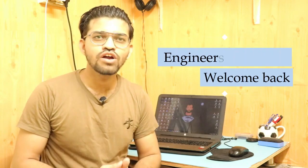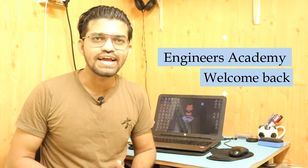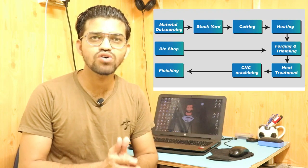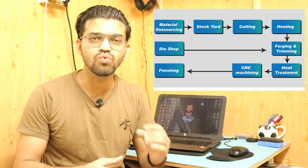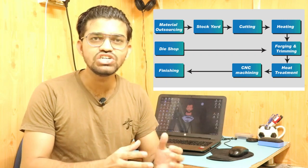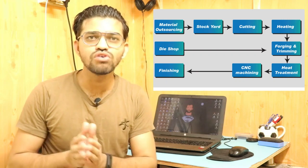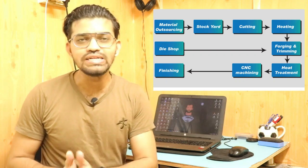Hi everyone, welcome back to another video of Ingenious Academy. In any manufacturing industry, there are several types of processes which are conducted on a workpiece from its initial stage up to the final stage. In the final stages, there are finishing operations and super finishing operations which are carried out on that particular workpiece. In this particular video, we are going to learn about a super finishing process called the lapping process.